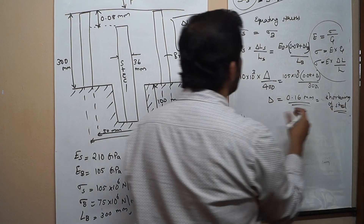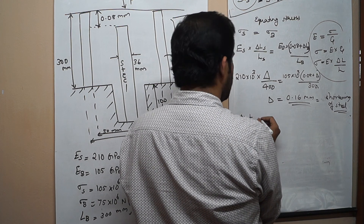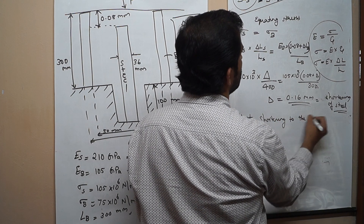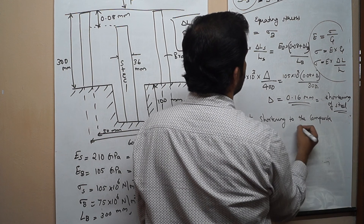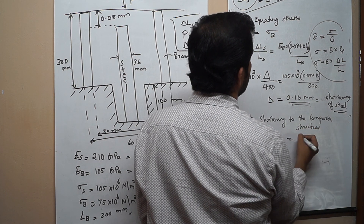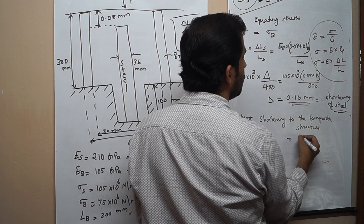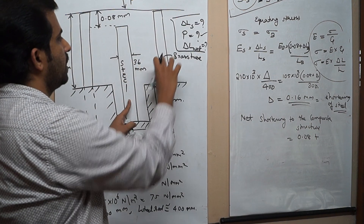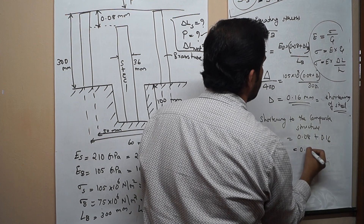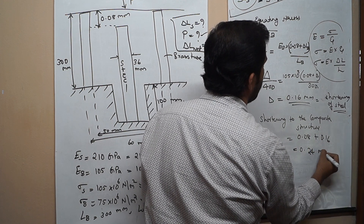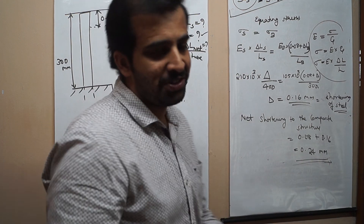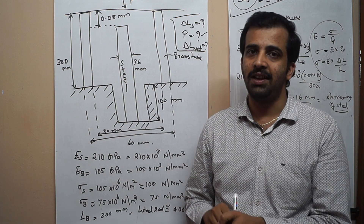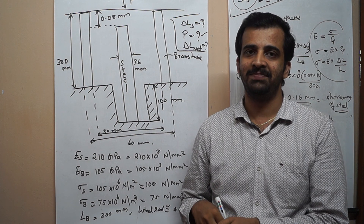The steel shortens by 0.16 mm. The net shortening of the composite structure is the initial 0.08 mm (brass compressed to reach steel) plus 0.16 mm (combined shortening), giving a net shortening of 0.24 mm. This is how we solve this problem — a very good problem demonstrating composite structure analysis. Thank you.